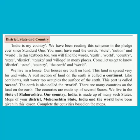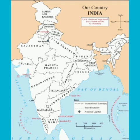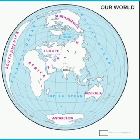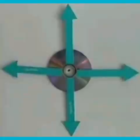Complete the activities based on the map. Symbols, pictures, signs, and different shapes and colors are used to present information in a map. A list of these symbols is given along with the map — this list is called the index. The index helps us to understand the map. This is the map of our country. Find our Maharashtra state on the map of our country and color it. In the map of the world given, color the part labeled India. Color the box next to the map in the same color and write India on the dotted line.